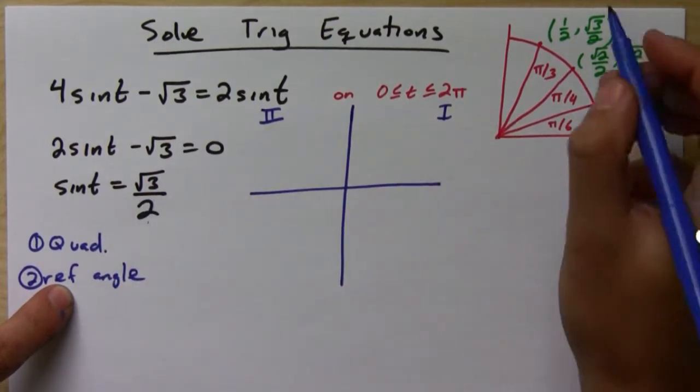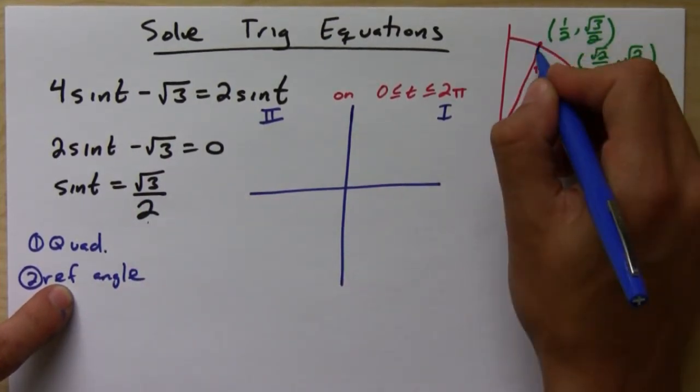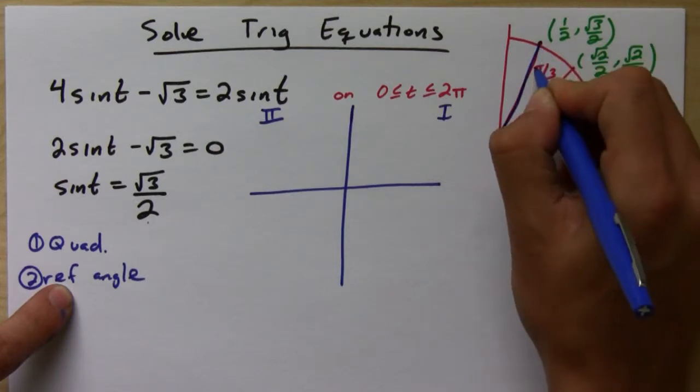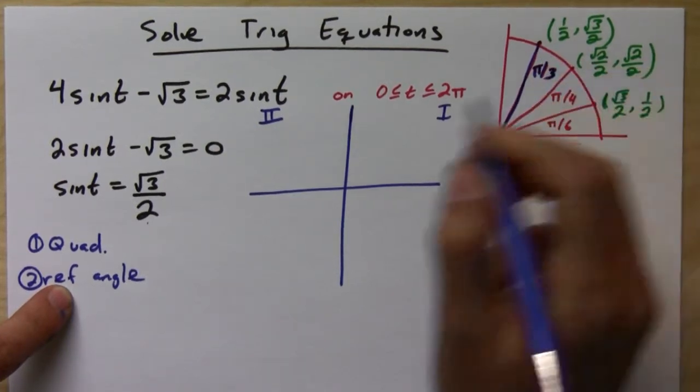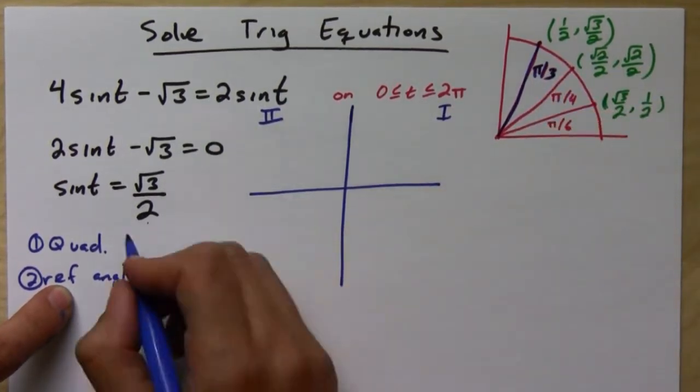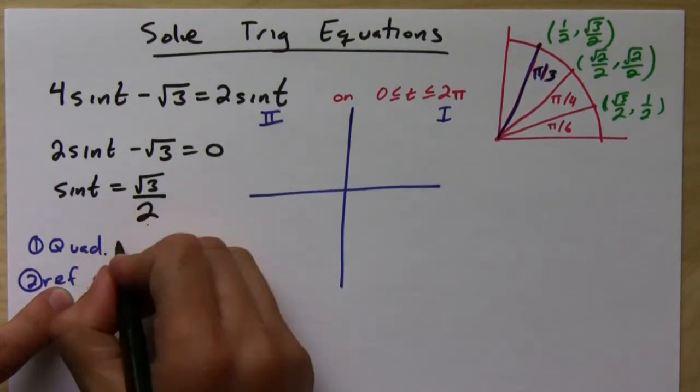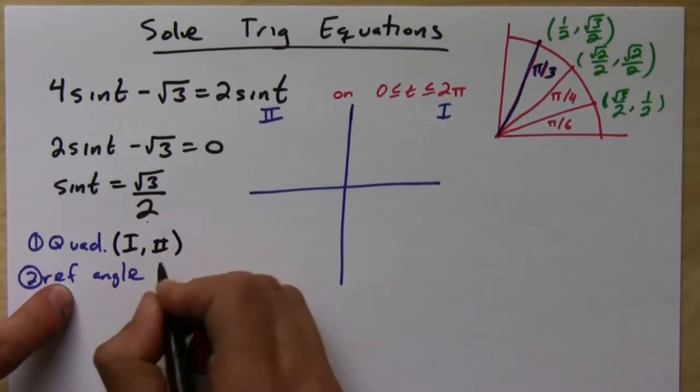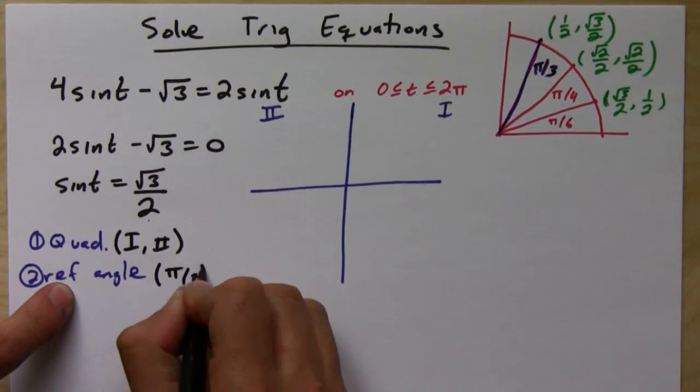And then the reference angle you get from the unit circle. So sine is root 3 over 2 when the reference angle is pi over 3. Okay. So quadrants 1, 2, reference angle, pi over 3.